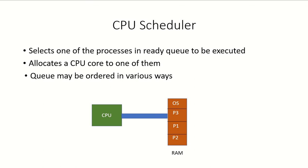The job of the CPU scheduler is to allocate the CPU to one of the processes available in the ready queue. It will select one process from the ready queue and allocate the CPU to it.